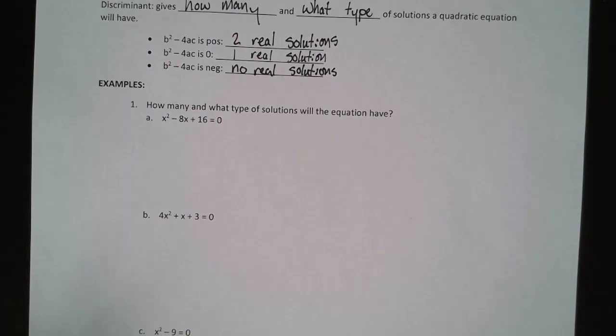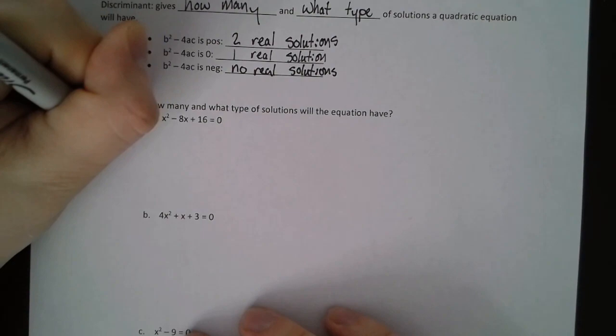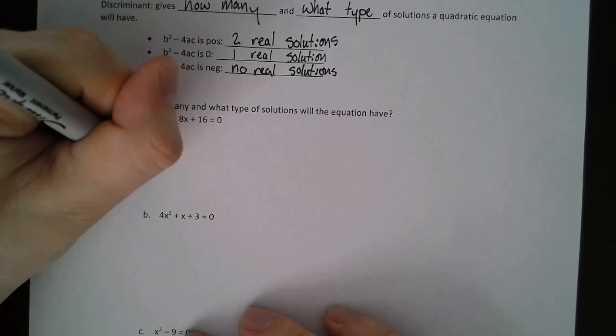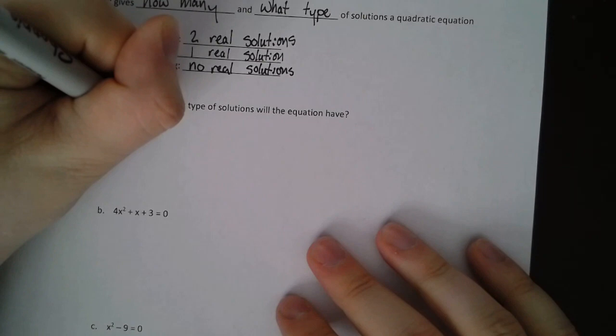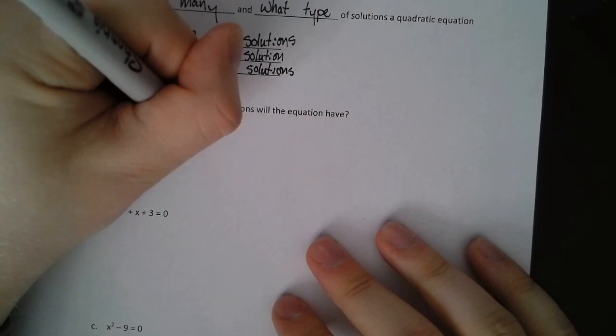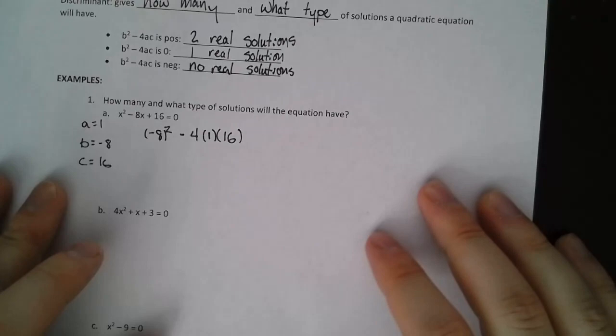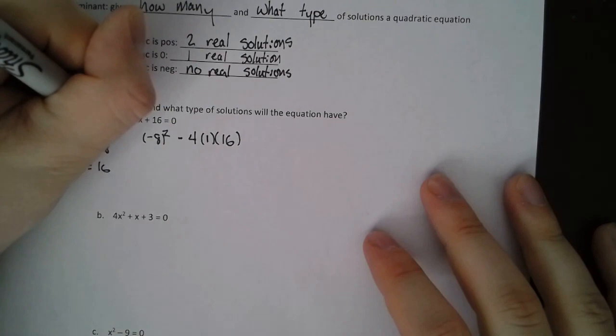Let's look at this first example here. We have this quadratic, it's in standard form of a, b, c. So the a value is 1, the b value is negative 8, the c value is 16. So we want to do b squared, negative 8 squared, minus 4 times a, which is 1, times c, which is 16. And that's all we need to do to find the discriminant. We don't need to use the rest of the quadratic formula. We just need this.